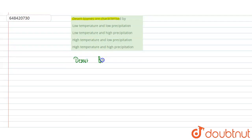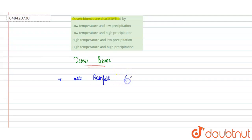If we talk about the desert biome and look at its important characteristics — these biomes experience a very less amount of rainfall. Rainfall is usually less than 50 centimeters per year. That is the low amount of rainfall occurring in the desert biome.